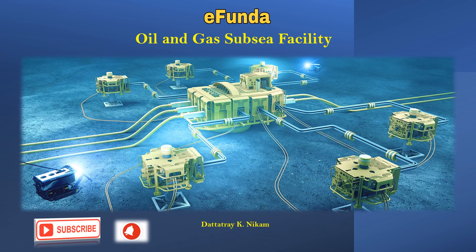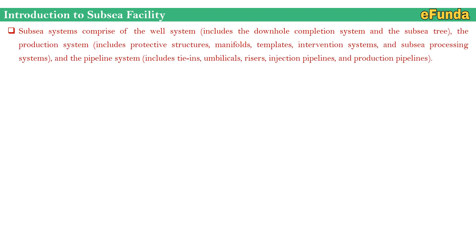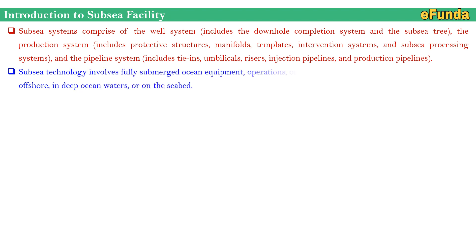Let's begin with our today's topic: oil and gas subsea facilities. Introduction to subsea facilities — subsystems comprise a well system which includes a downhole completion system and the subsea tree. The production system includes protective structure, manifold, templates, intervention system, and a subsea processing system. The pipeline systems mainly include lines, umbilicals, risers, injection pipelines, and production pipelines.